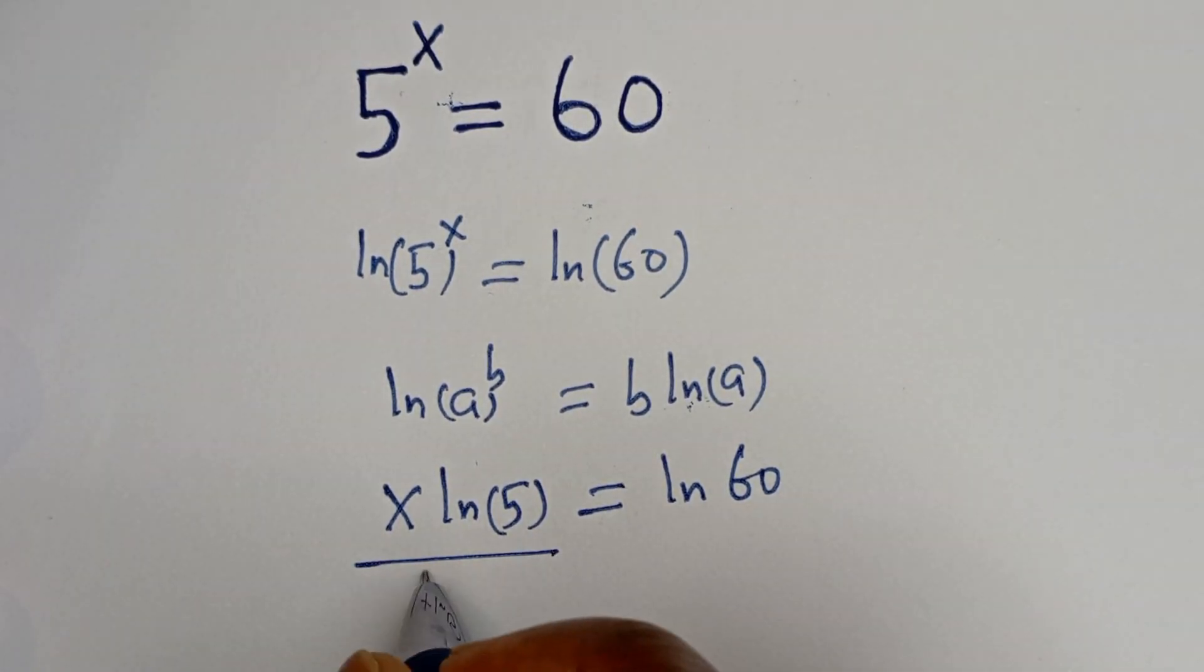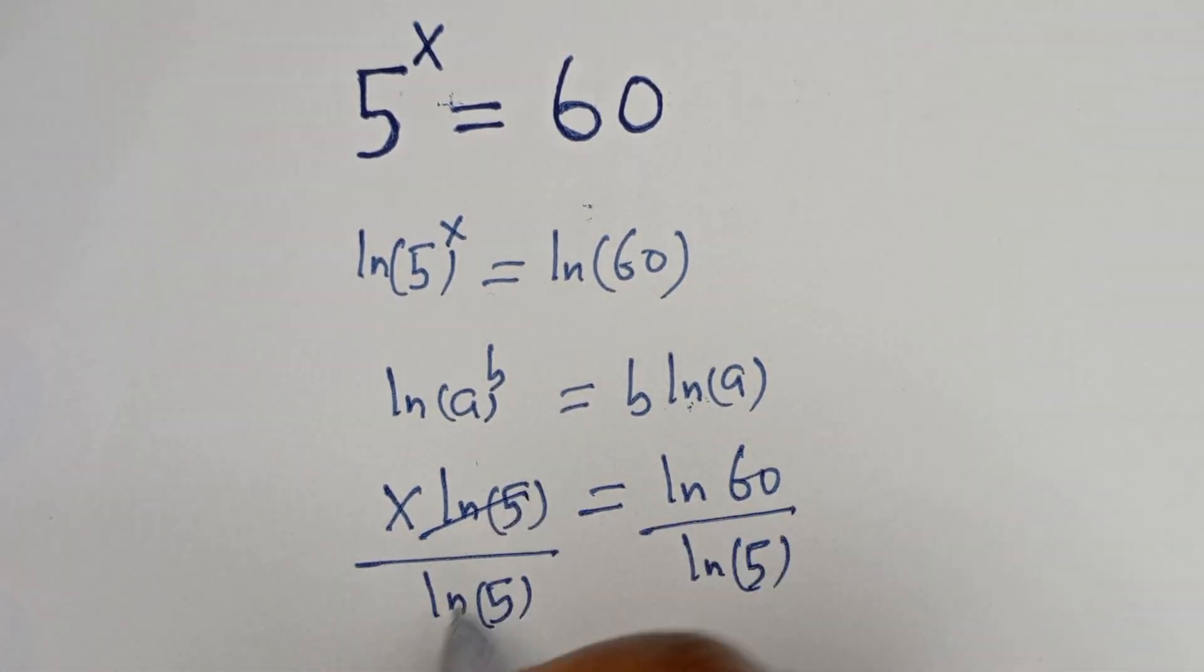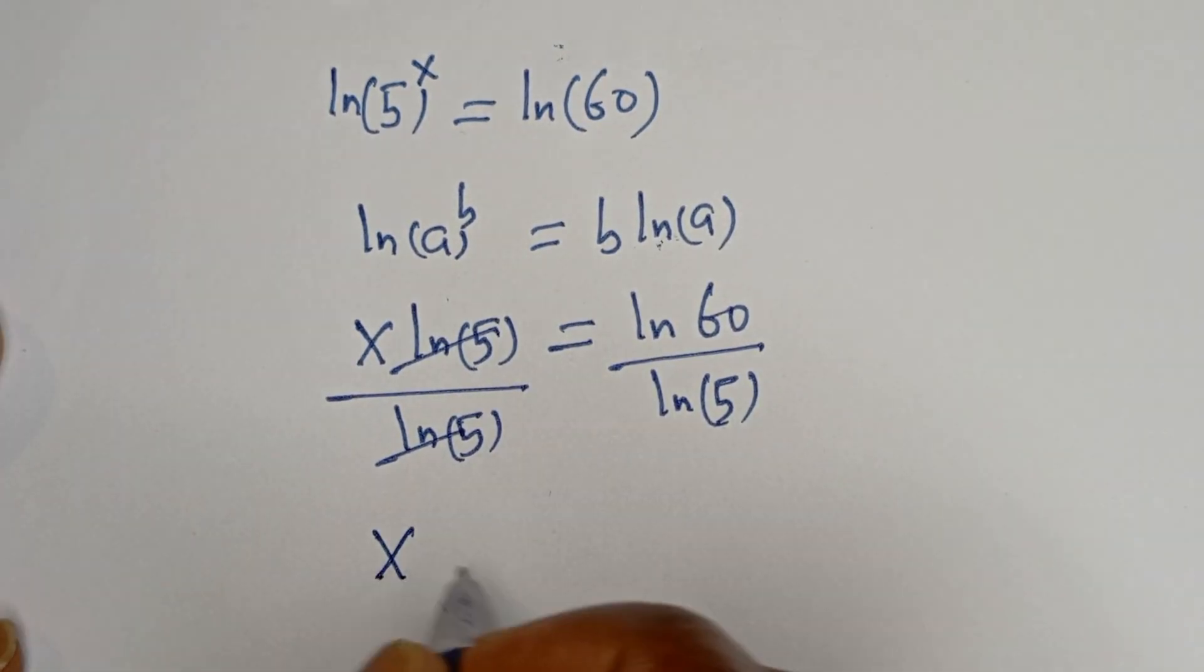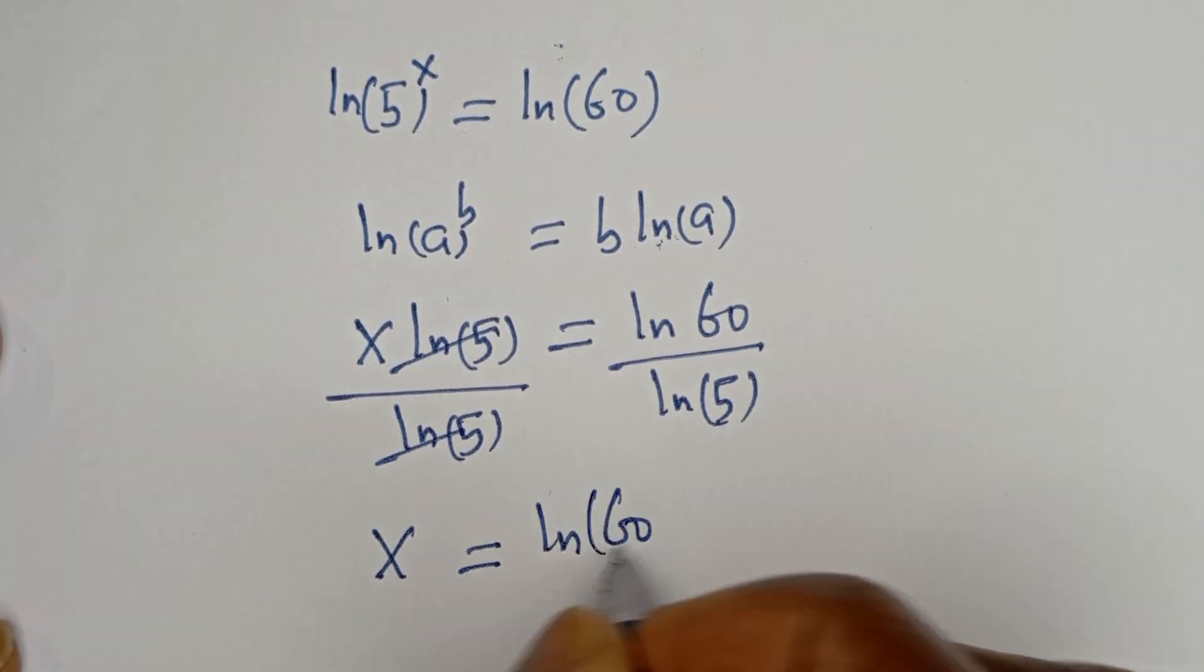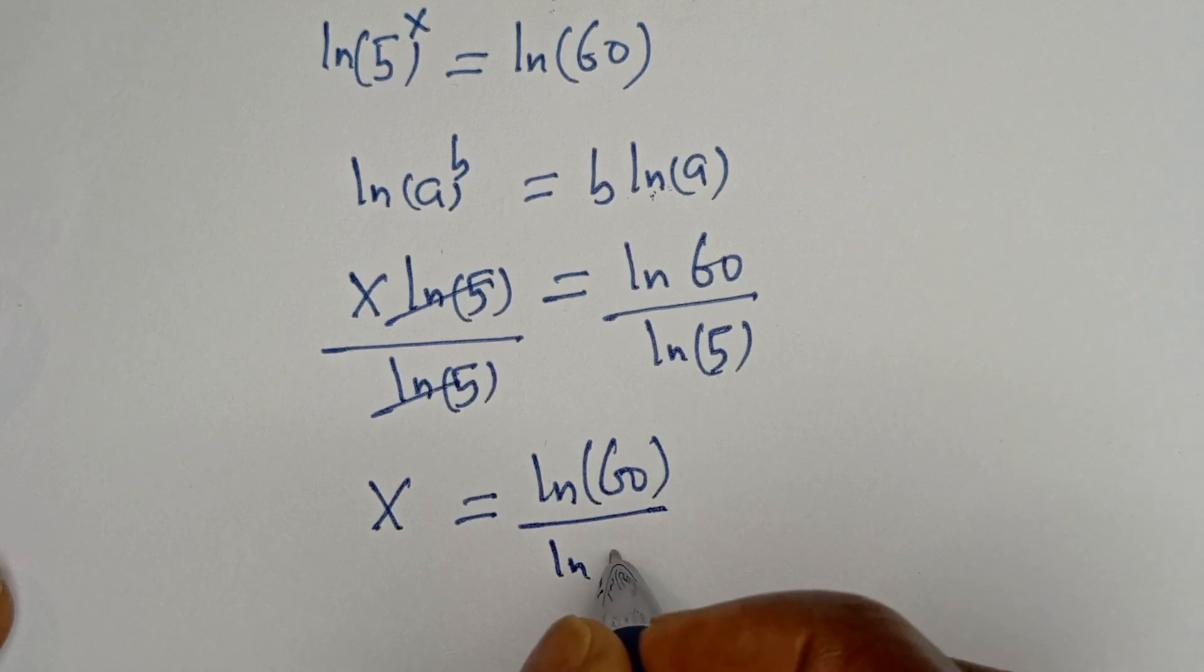Now let's divide both sides by ln of 5. This will cancel, so x is equal to ln of 60 divided by ln of 5.